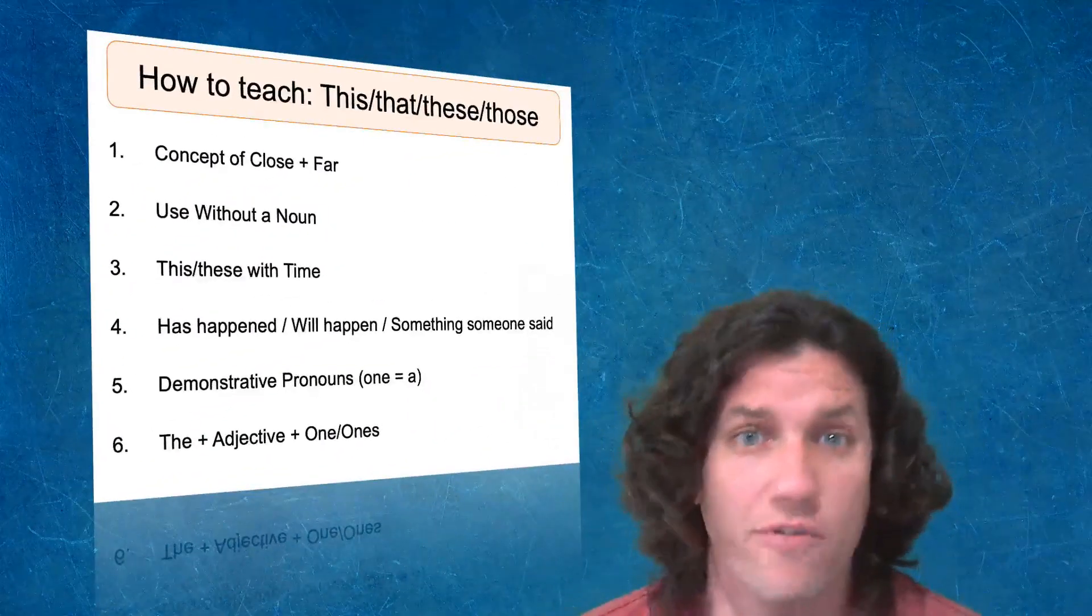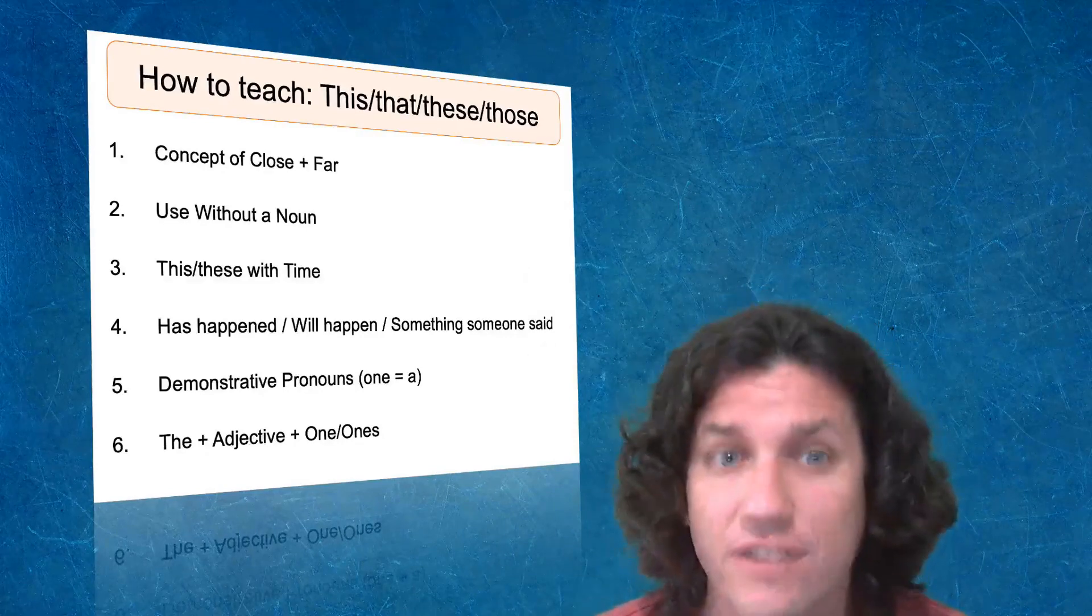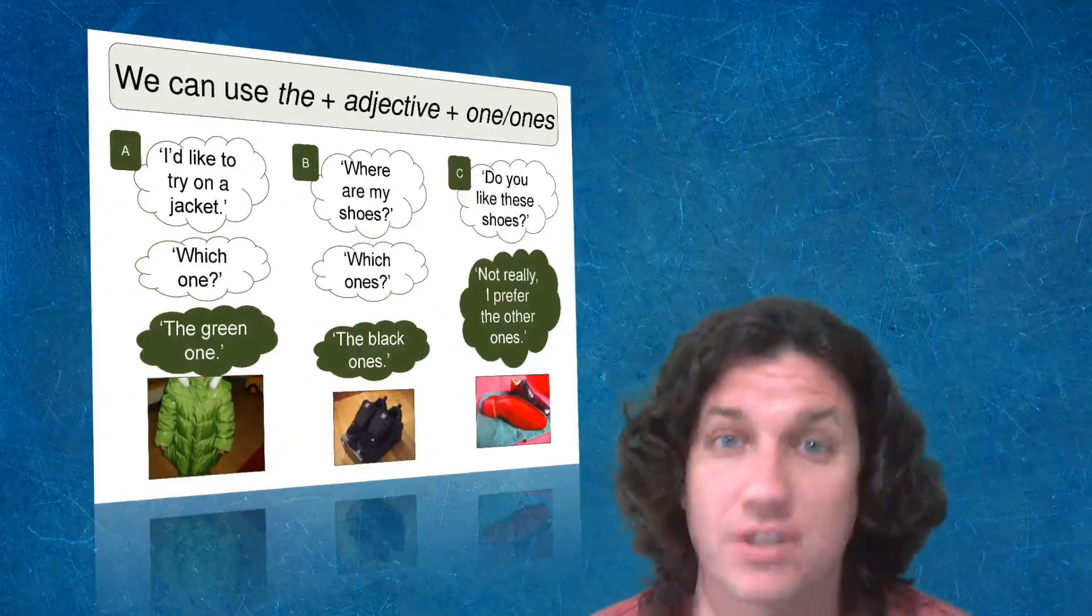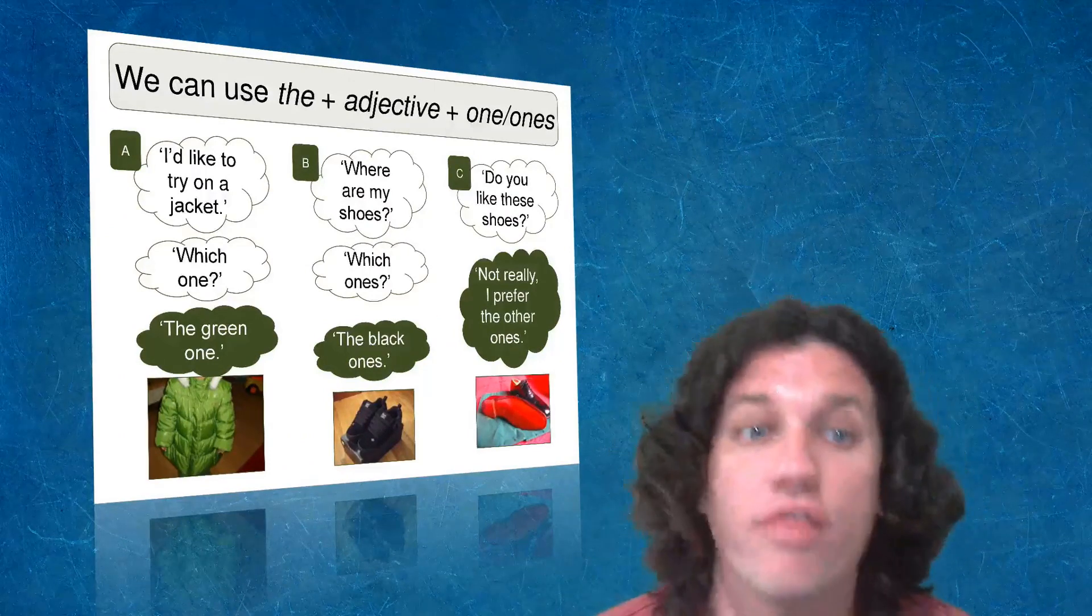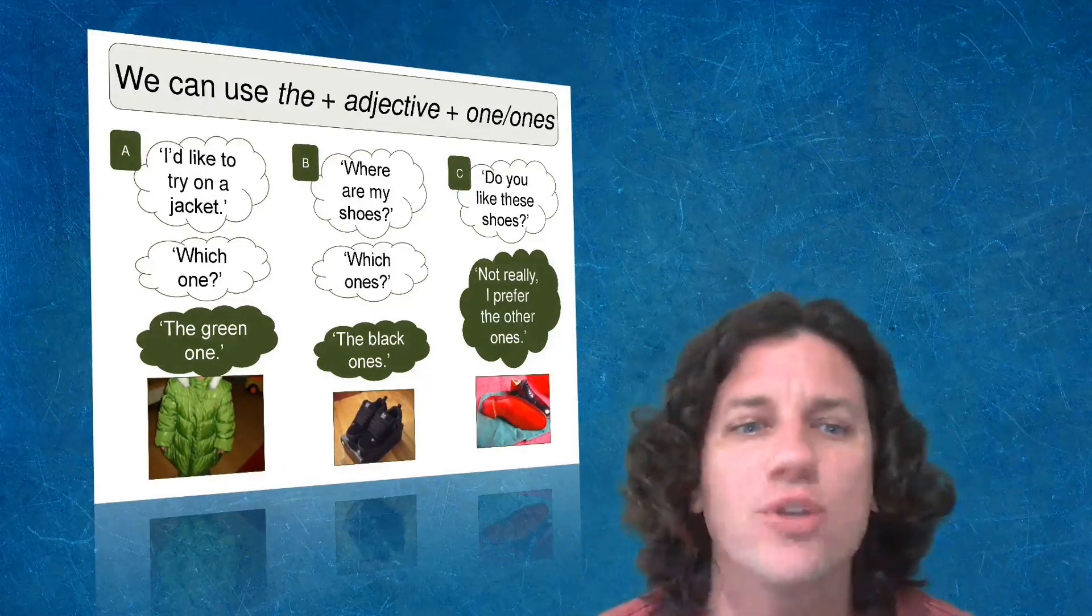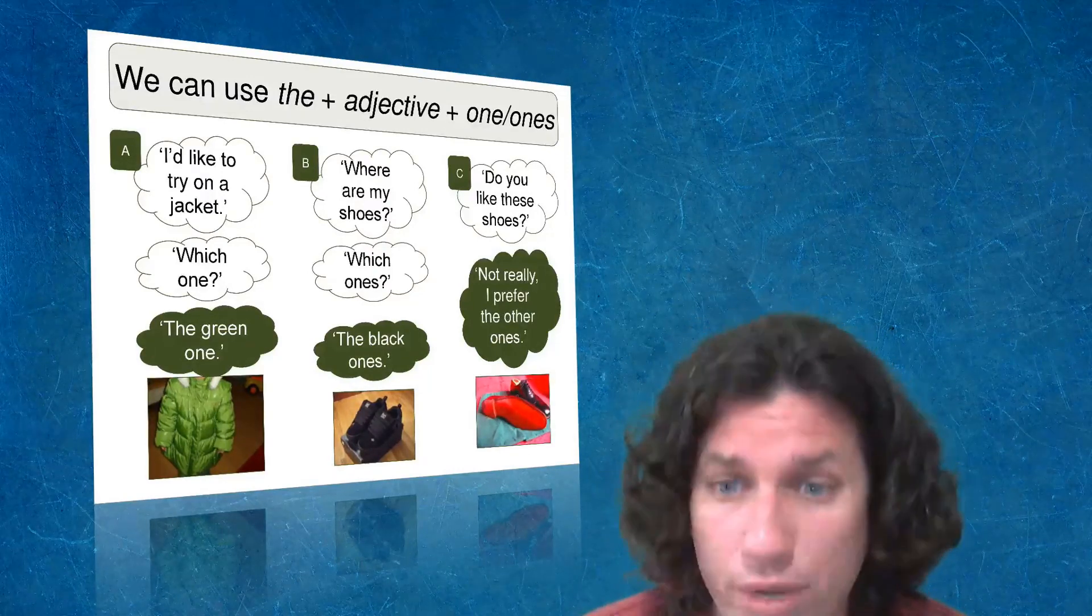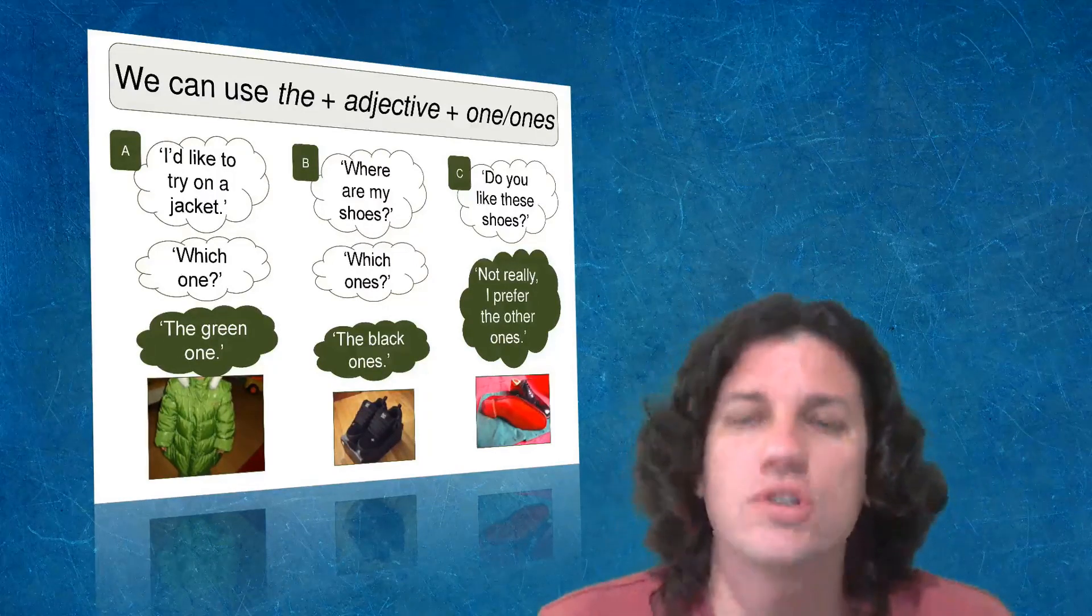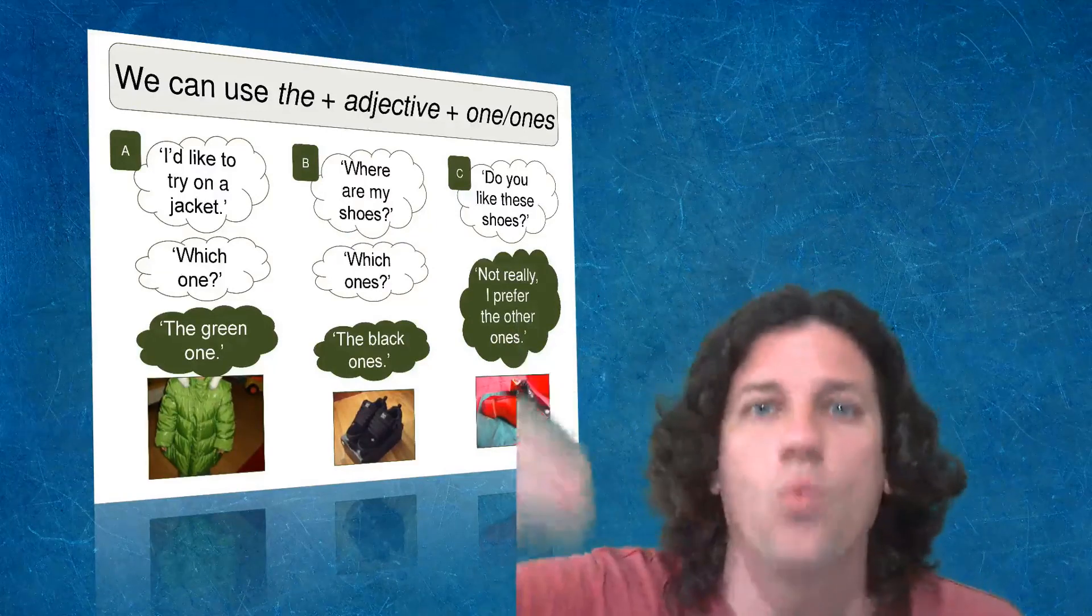Now let's move on to key concept number six, using the plus adjective plus one or ones. And this is another complicated one. So I've broken it down on this slide where we can see some examples. I'd like to try on a jacket, which one, the green one. Where are my shoes, which ones, the black ones. Do you like these shoes? Not really. I prefer the other ones. So we want students to learn not only how to recognize, but to use the plus adjective plus ones.